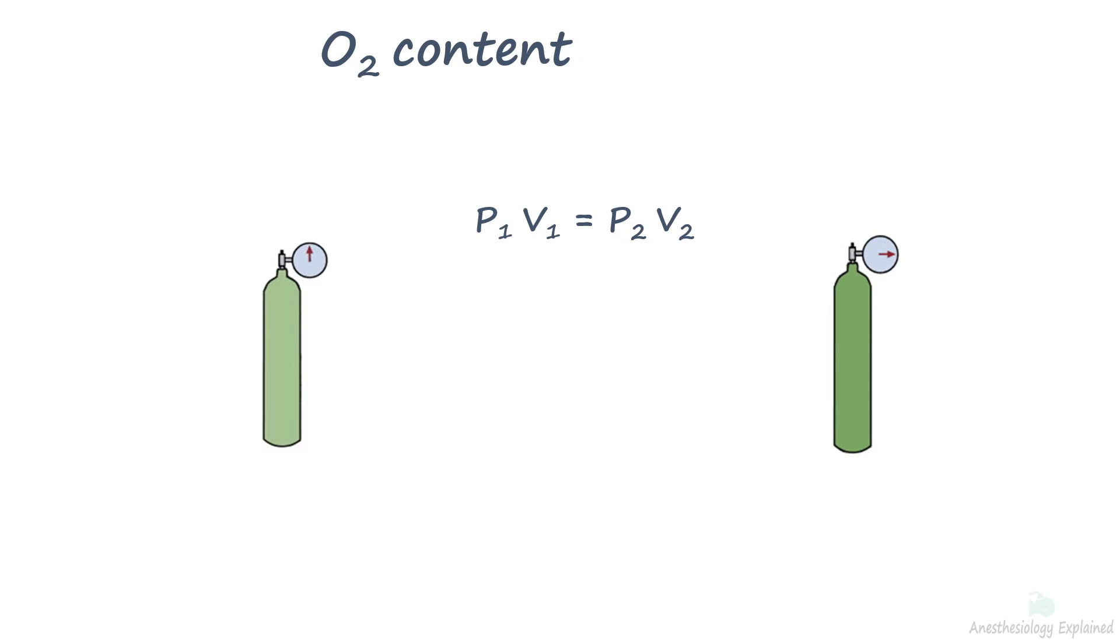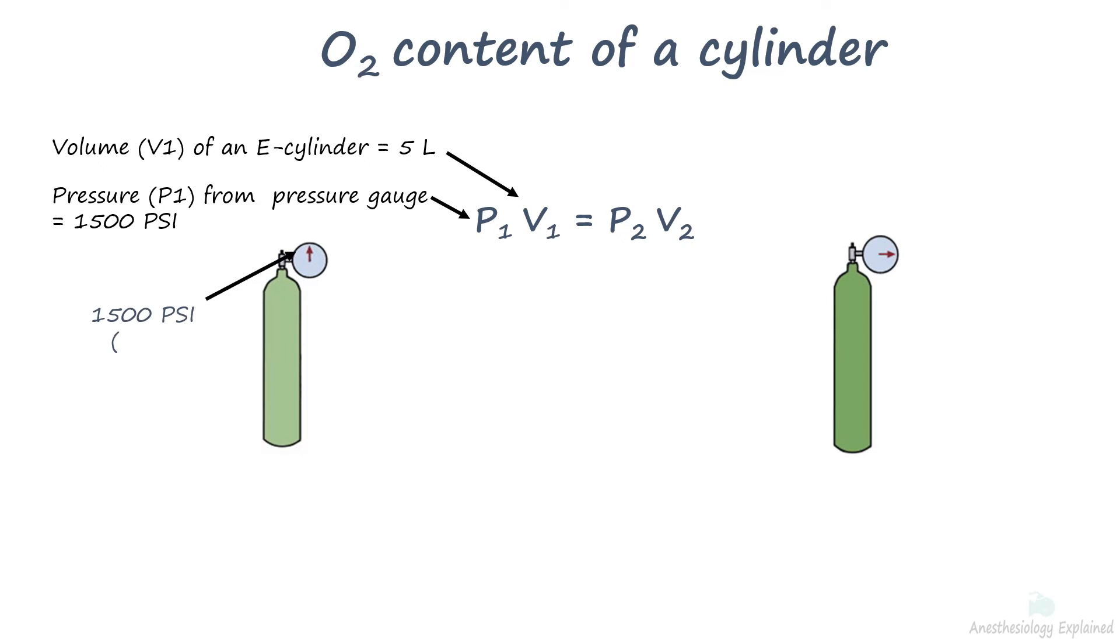We can apply Boyle's law to measure the cylinder content based on the pressure gauge reading. A typical E-type cylinder has an internal volume of 5 liters. This is the volume, V1, of an E-cylinder. The reading on the pressure gauge gives us P1 for that volume, let's say 1500 psi since the cylinder is being used. The atmospheric pressure, P2, is 14.7 psi. All we need to calculate is the volume of uncompressed oxygen V2 in cylinder.